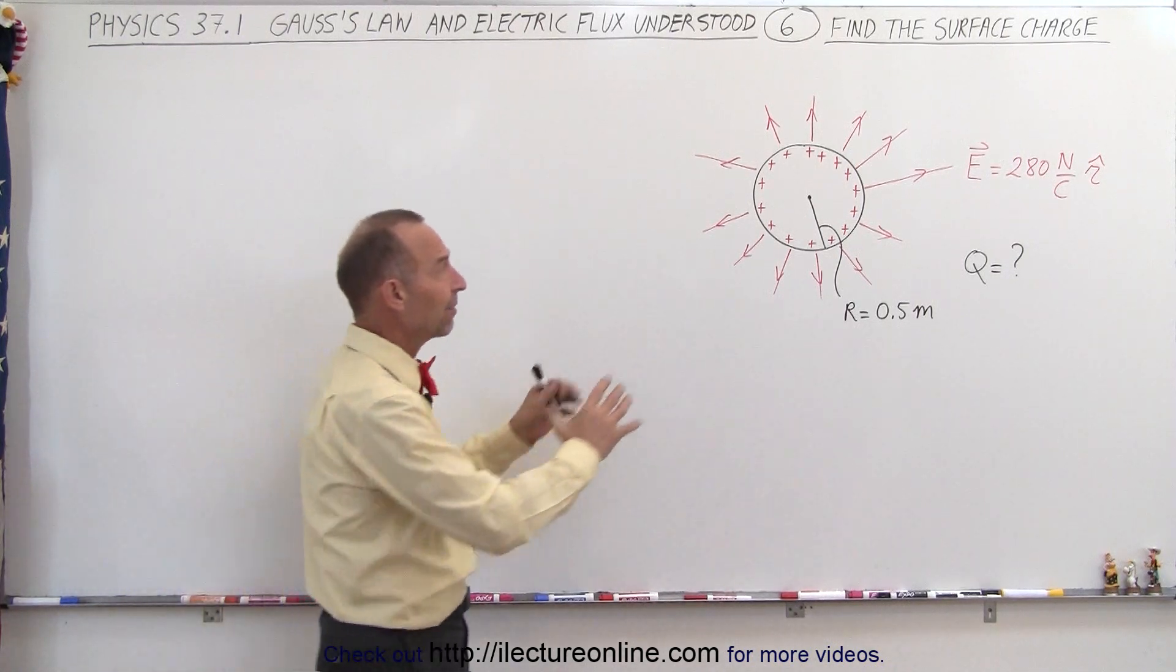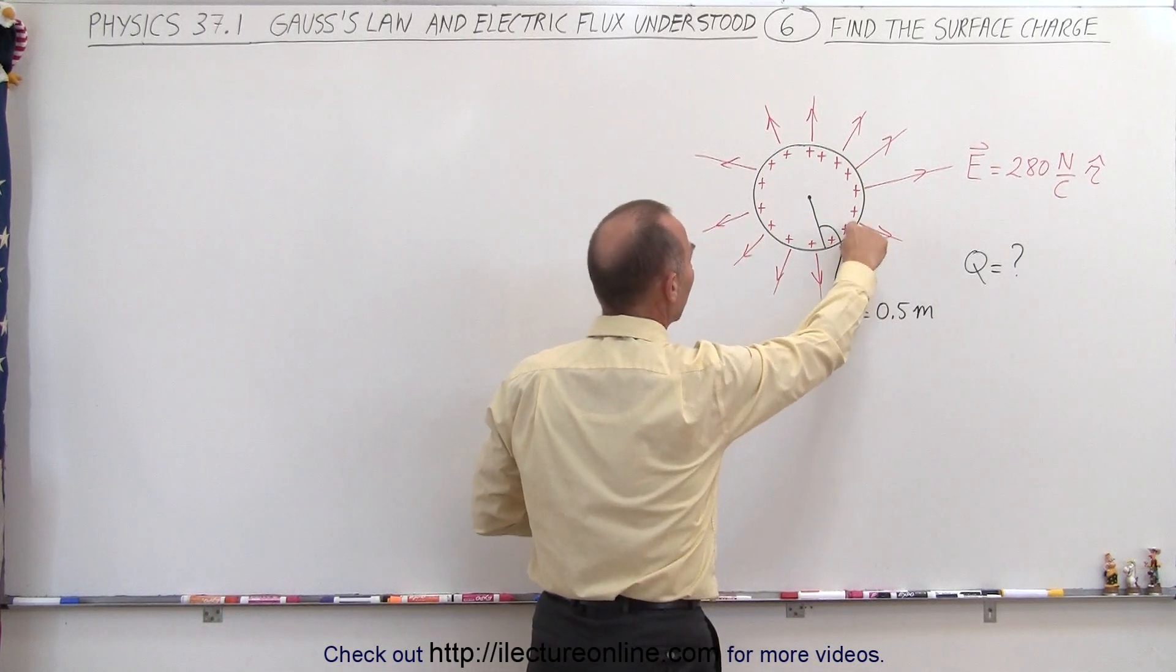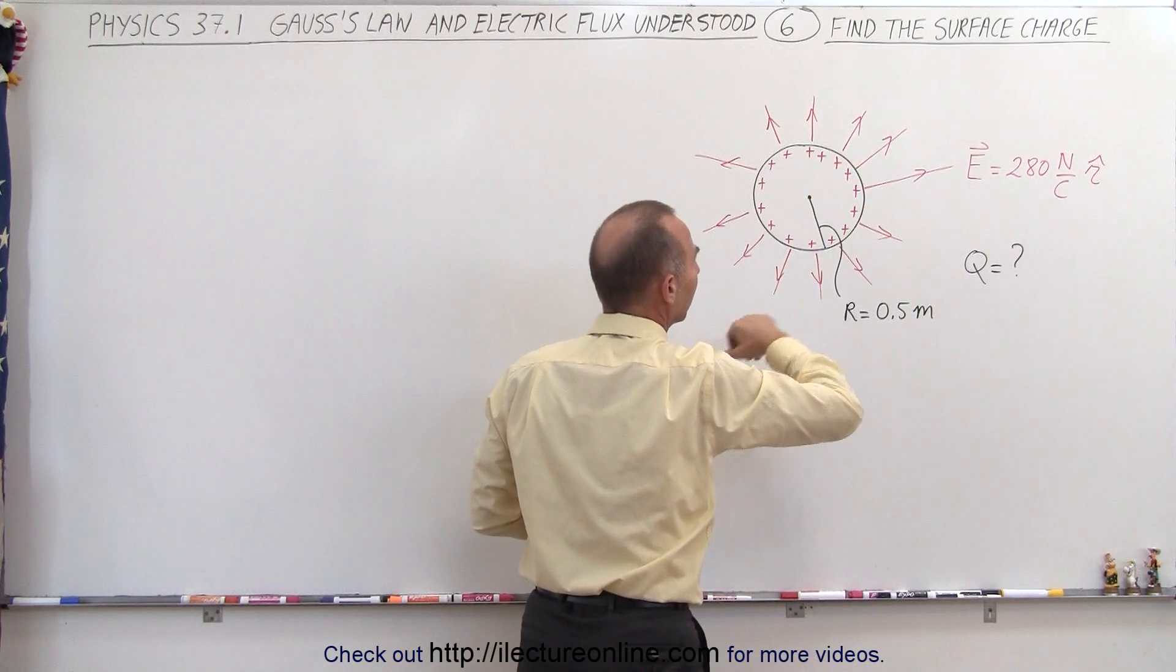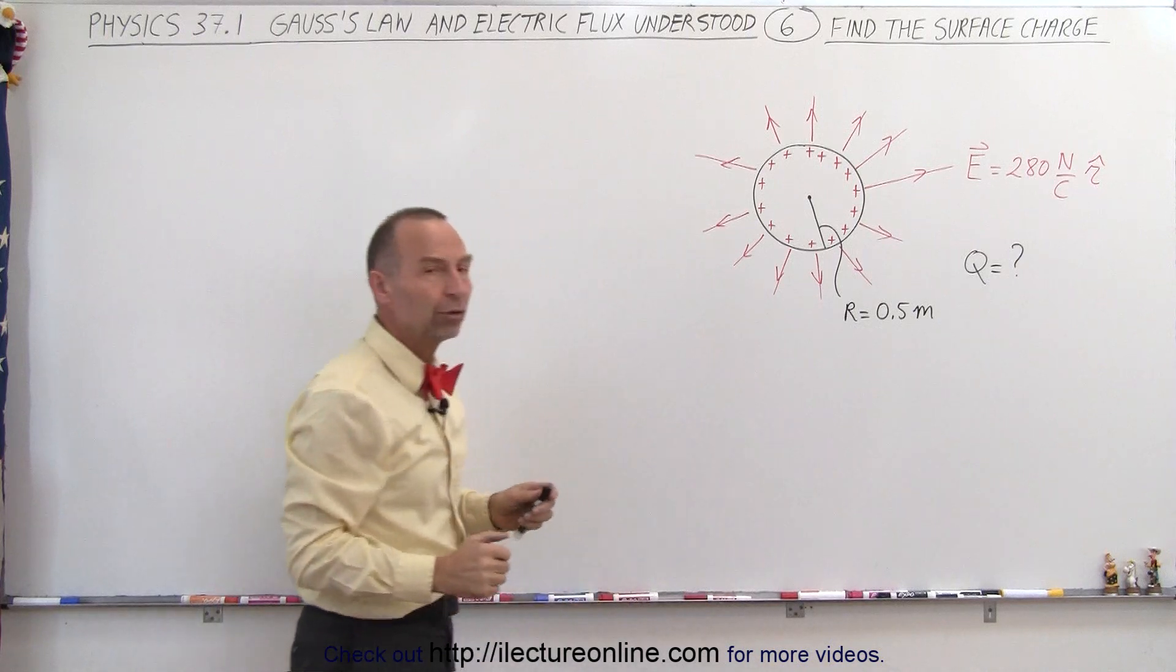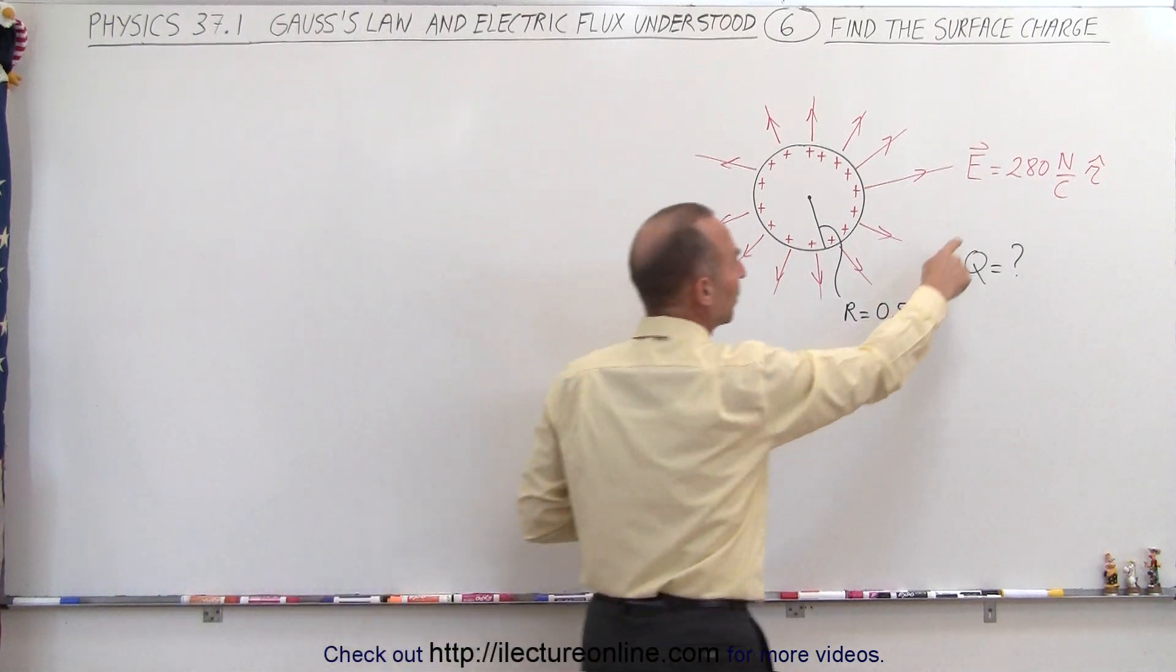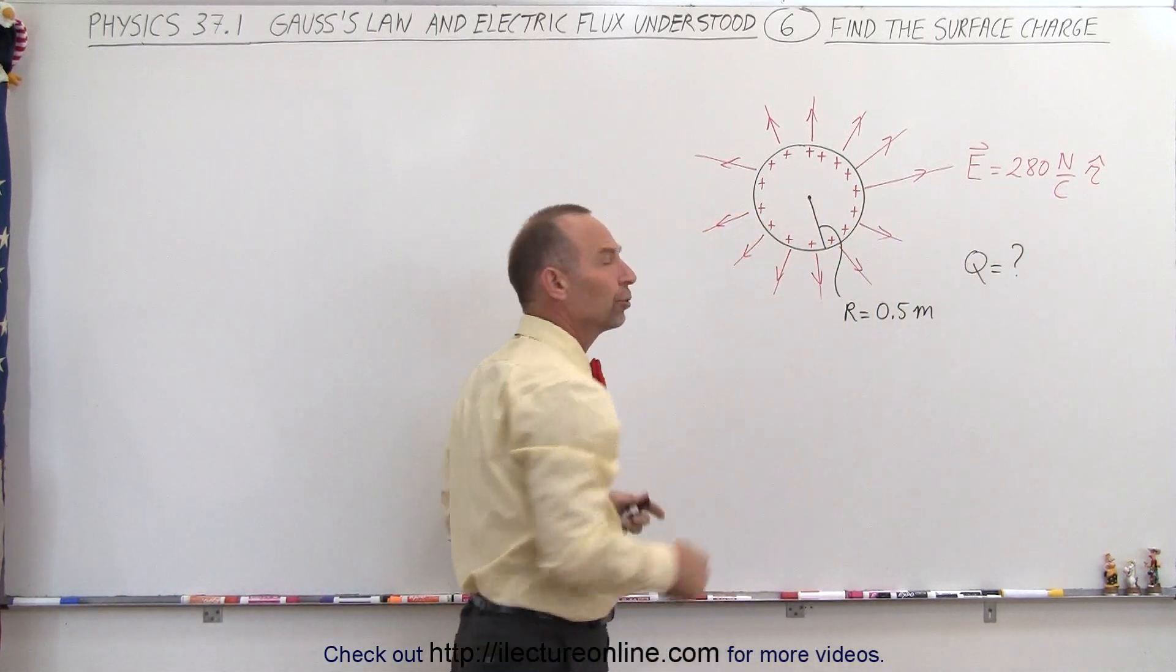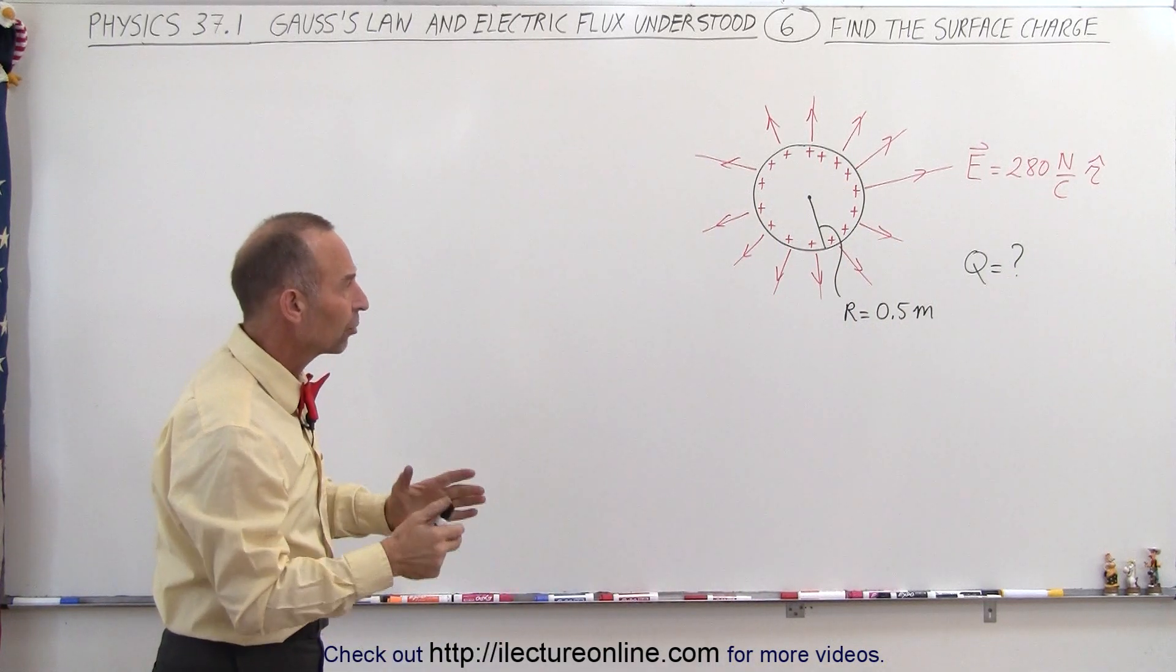What we have here is a spherical conductor with a radius of 0.5 meters and we have charge distributed on the surface of this conductor. The electric field right at the surface has a magnitude of 280 newtons per coulomb. It's directed radially outward, so in vector format we write it with R unit vector, which is the radial unit vector pointing away from the surface of that charged conductor.